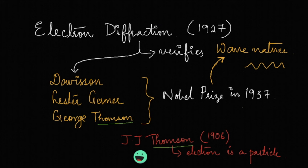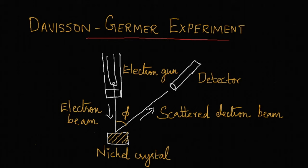This is the experimental arrangement as done by Davison and Germer. You can see an electron gun here from which a well collimated beam of electron is emerging. This electron is falling onto a nickel crystal and they get scattered in all directions. The intensity of scattered electrons in this direction is calculated as a function of this angle phi.